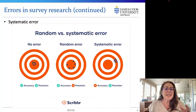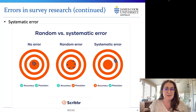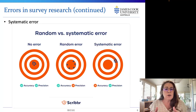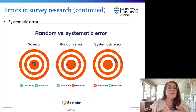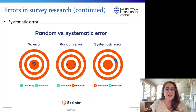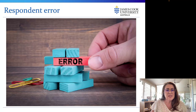Systematic errors result from some imperfect research design or from a mistake in the execution of the research — also called non-sampling errors. A sample bias exists when the results show a persistent tendency to deviate in one direction from the true value of the population parameter. The two general categories of systematic error are respondent error and administrative error, and both types can be managed through careful execution of the research.